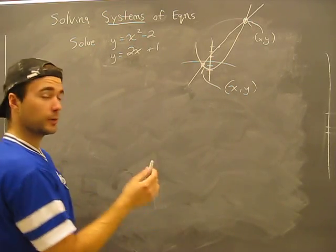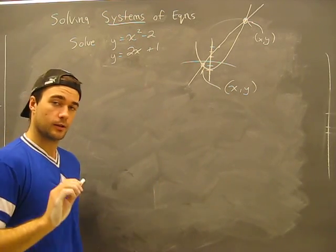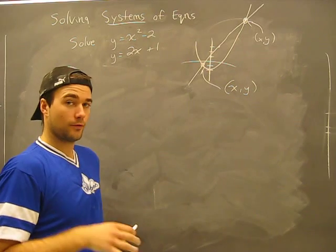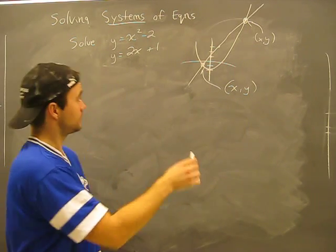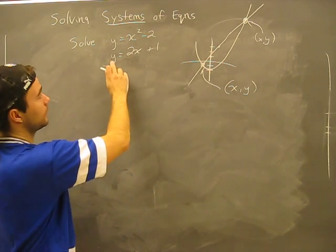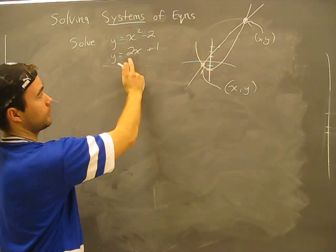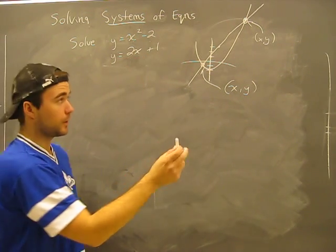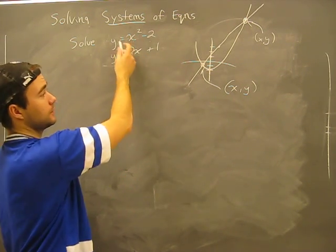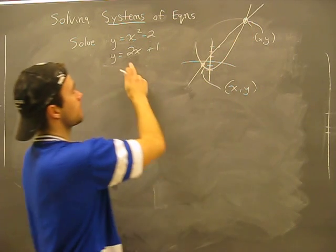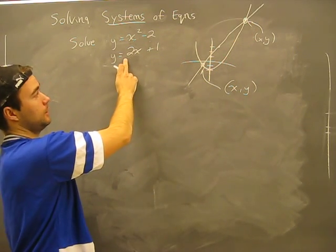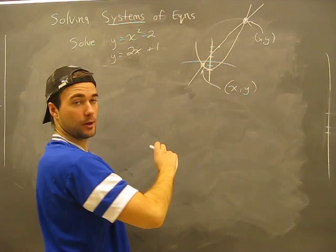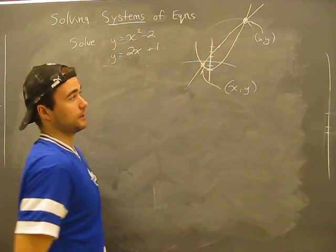We're going to do another example here, but don't let these things throw you off — you just have to dig into your math sense to figure it out. Here's your system of equations: x squared minus 2, and x squared — a positive x squared is a parabola. And here's the other one: positive 2x plus 1, which is a positive slope line.